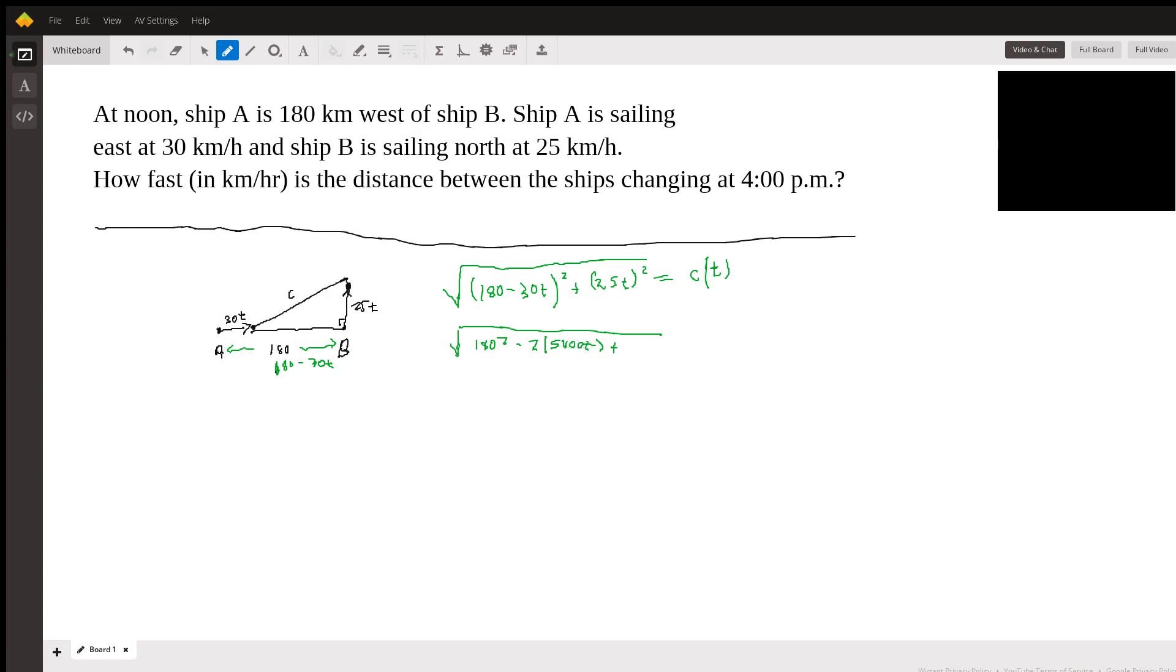Plus 900T² plus 25 squared, I think is 625, so 625T² is equal to c(t).